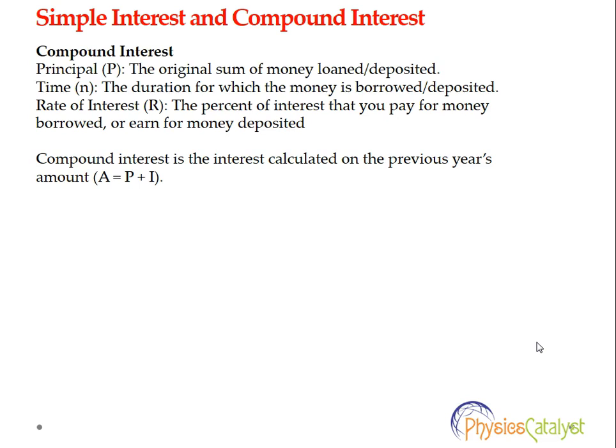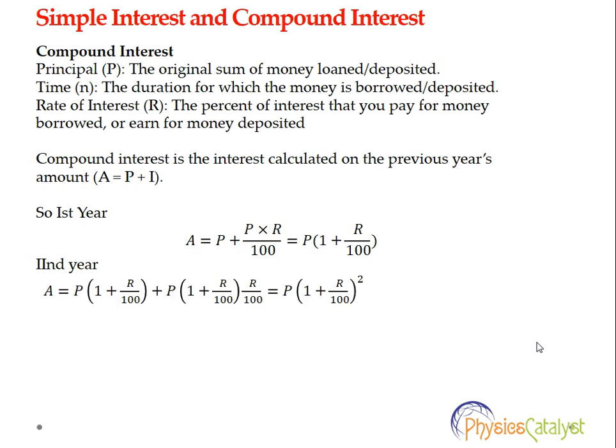Compound interest is the interest calculated on the previous year's amount, where Amount = P + I. For the first year, the amount is given by Principal + Simple Interest. For the second year, the interest is charged on the total amount of the previous year. So for the first year: A = P + P × R/100, which equals P(1 + R/100).